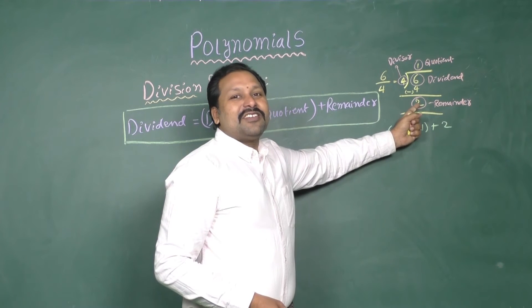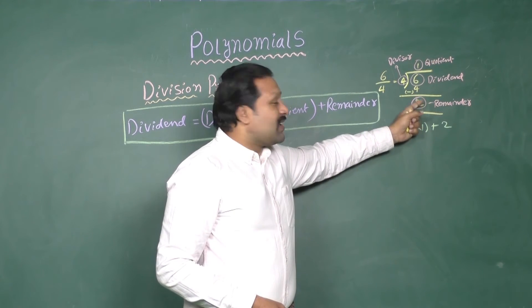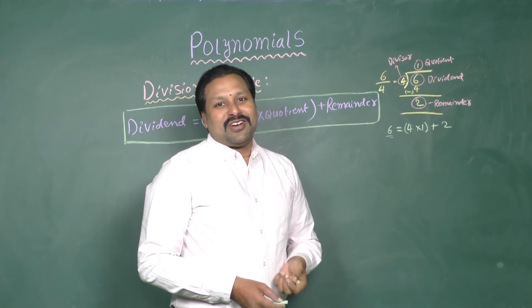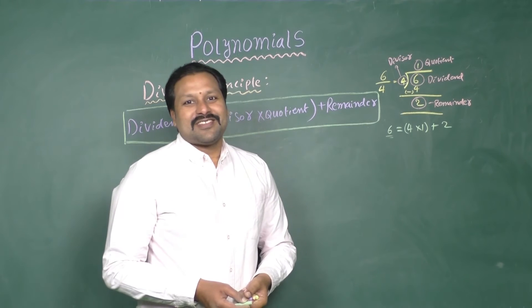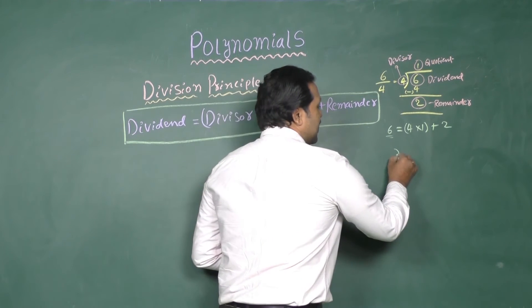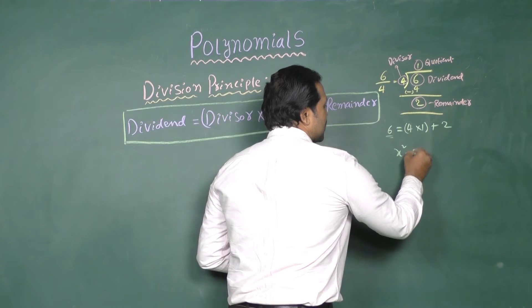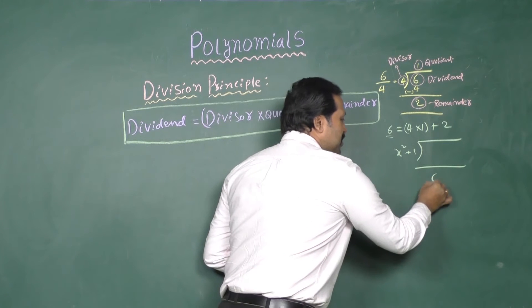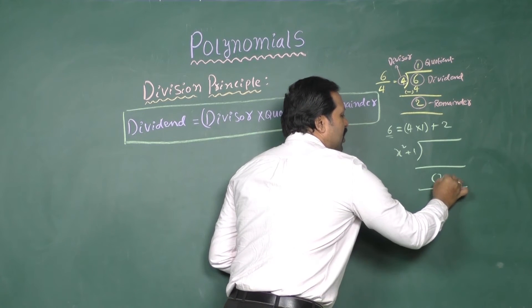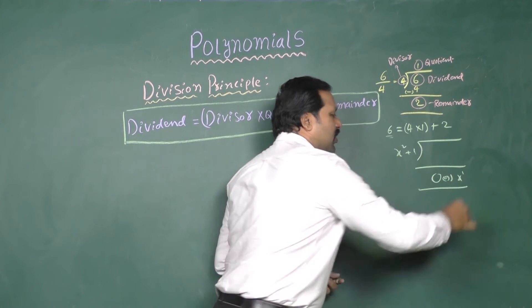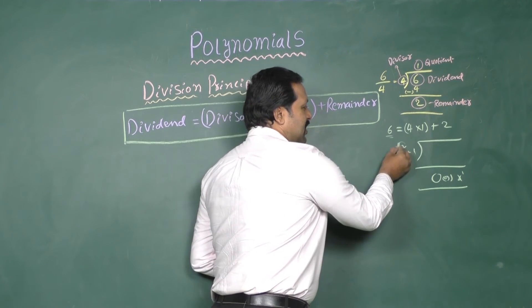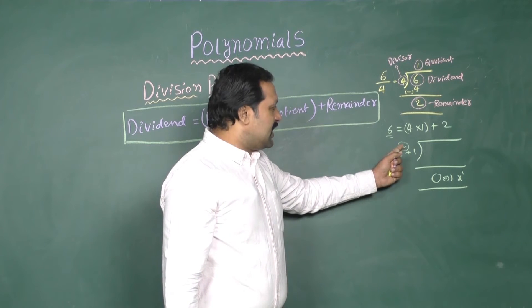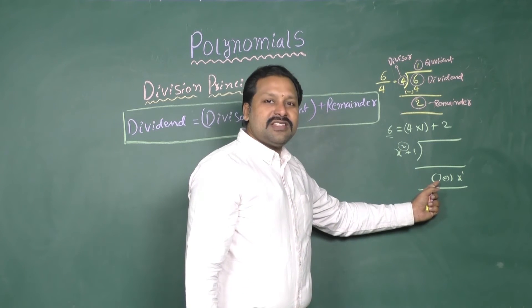the remainder may be 0 or less than the divisor. Here, the same term, if you discuss with Polynomials, then the divisor is in terms of x square plus 1 something. And the remainder may be 0 or x power of 1. See here, in the divisor, the power of x is 2. So, leading degree is here 2.